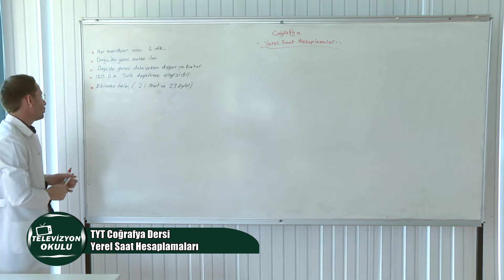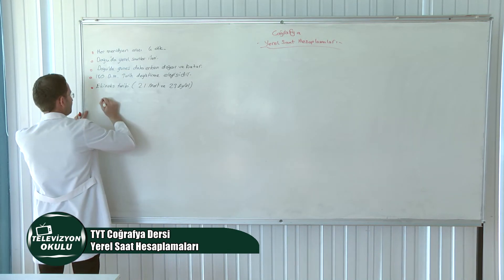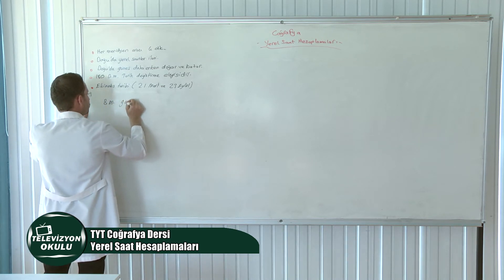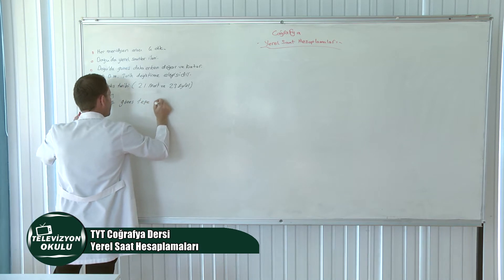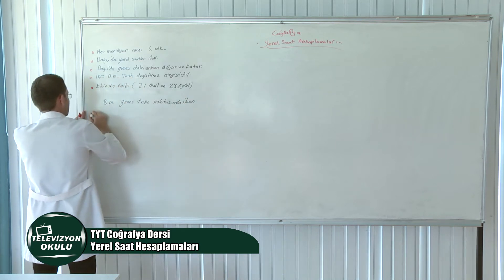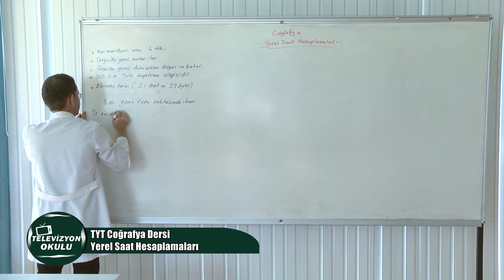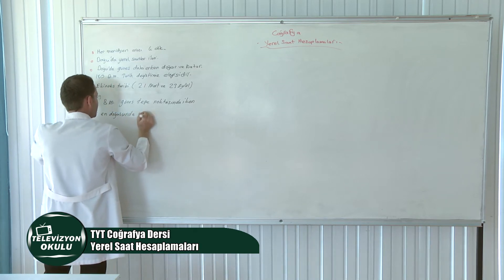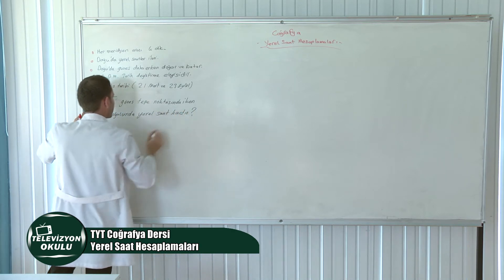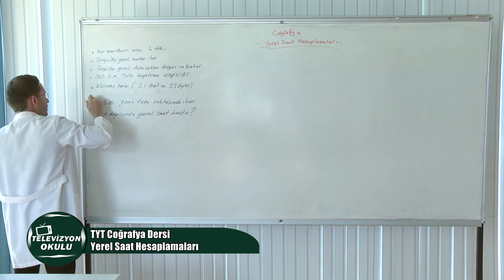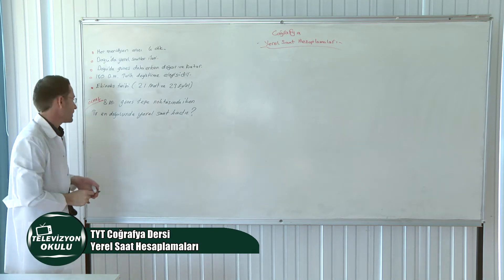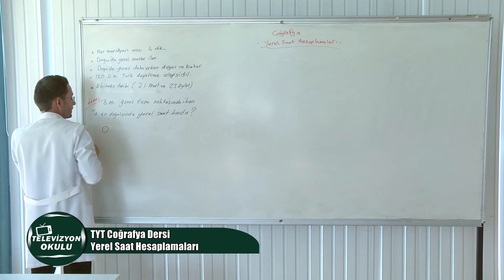Yerel saatlerle ilgili birkaç örnek yapalım. Mesela, başlangıç meridyeninde güneş tepe noktasındayken Türkiye'nin en doğusunda yerel saat kaçtır? Bu soruyu çözebilmemiz için öncelikle başlangıç meridyeninin sayı değerini bilmemiz gerekecek. Başlangıç meridyeninin sayı değeri sıfırdır.